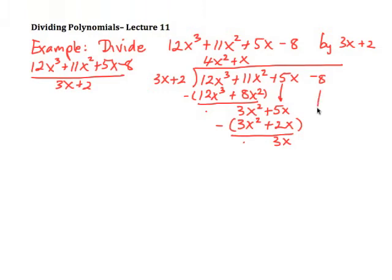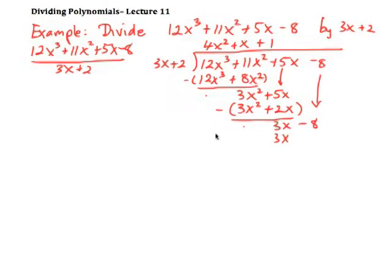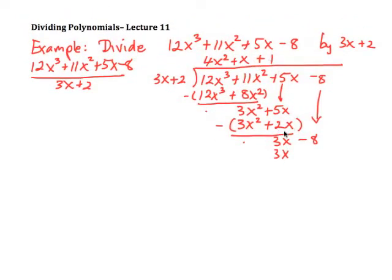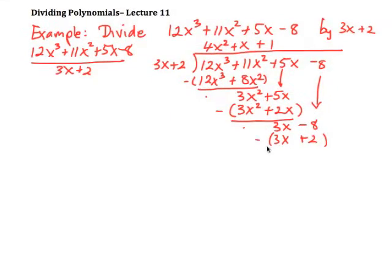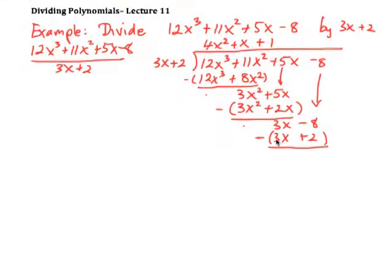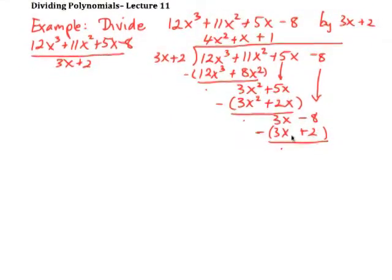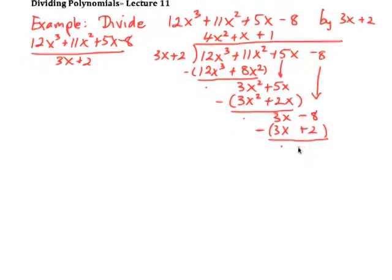And now we bring down the negative 8. And we say, what do we multiply 3x by to get 3x? Well, it's 1. So I end up with 3x, and 2 times 1 is 2. And again, we now subtract. And I get 0 here, 3x minus 3x, and I get negative 8 subtract 2 is negative 10.